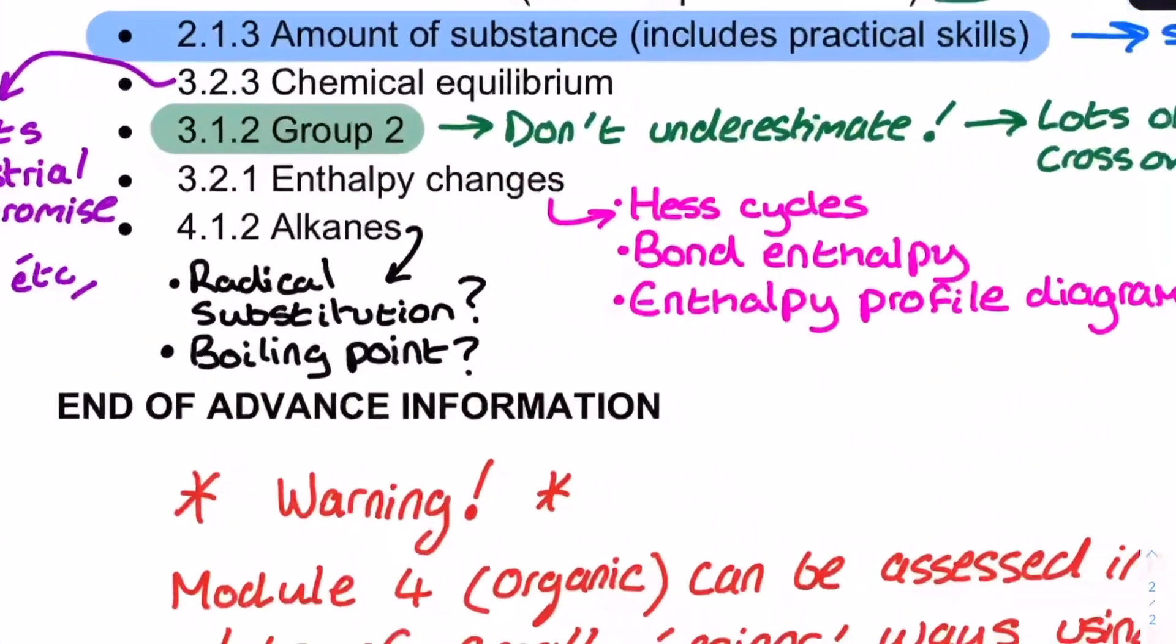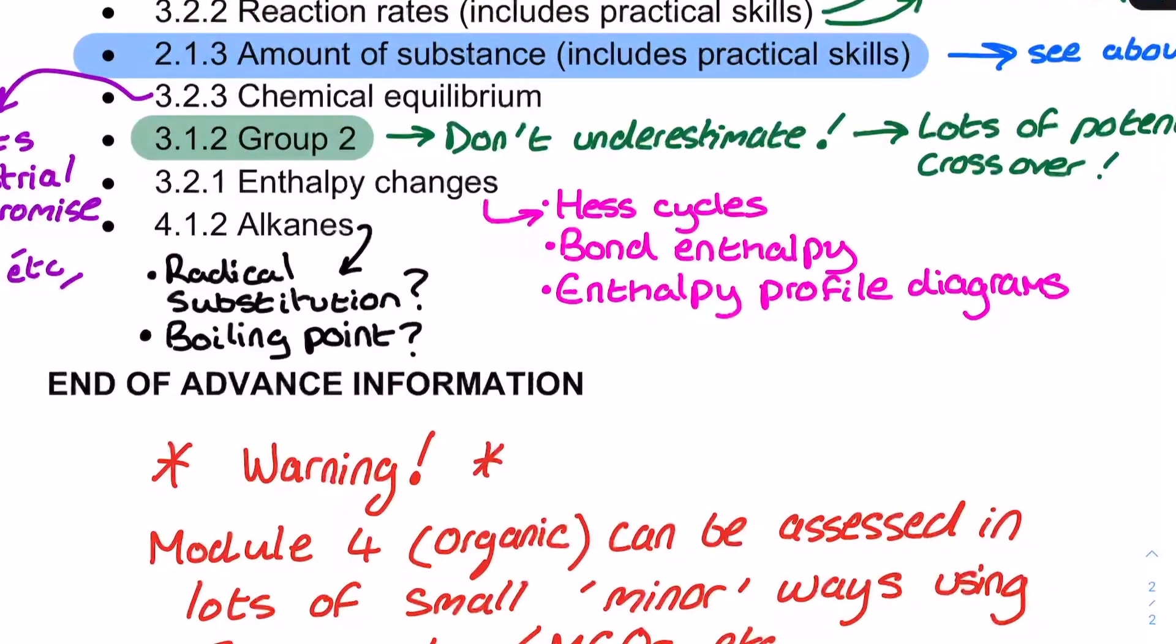Enthalpy changes comes up again in the depth in chemistry paper. And it doesn't say in practical contexts here, but please still be careful with that calorimeter. Here we can see I'm giving the opportunity for this section of our list to remind you about Hess cycles, bond enthalpy, so like bonds broken minus bonds made. We've got enthalpy profile diagrams. Excellent way for the examiner to test your precision here. So, please be careful with those contexts.